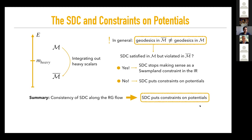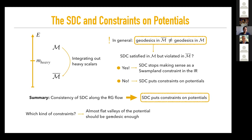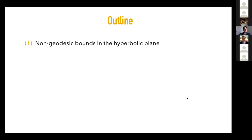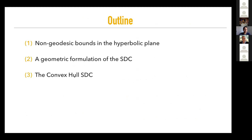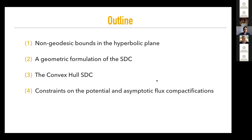The following question is: which kind of constraints? One can say that almost flat valleys of the potential should be geodesic-enough, but what do we mean by that? In order to find out, let us consider the interplay between the Swampland distance conjecture being realized for geodesics and non-geodesic trajectories. The outline of the talk: first I will consider non-geodesic paths in the hyperbolic plane, then generalize by giving a new geometric formulation of the SDC, recast it as a new convex hull SDC, and finally talk about constraints on potentials and the asymptotic flux conjecture.